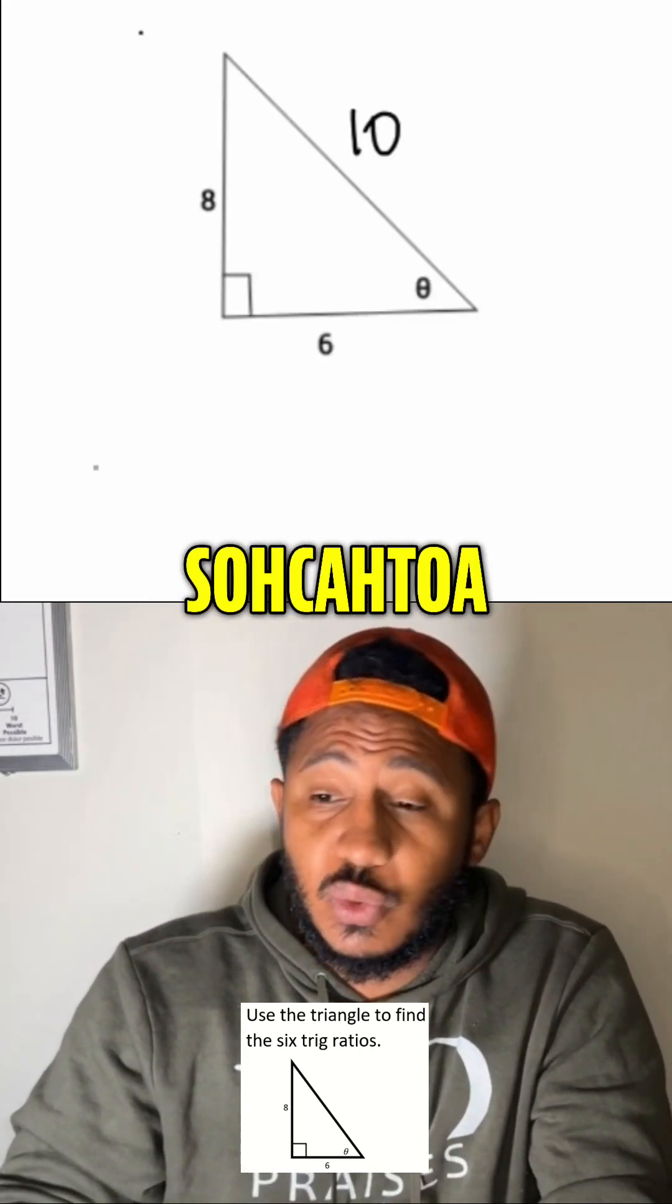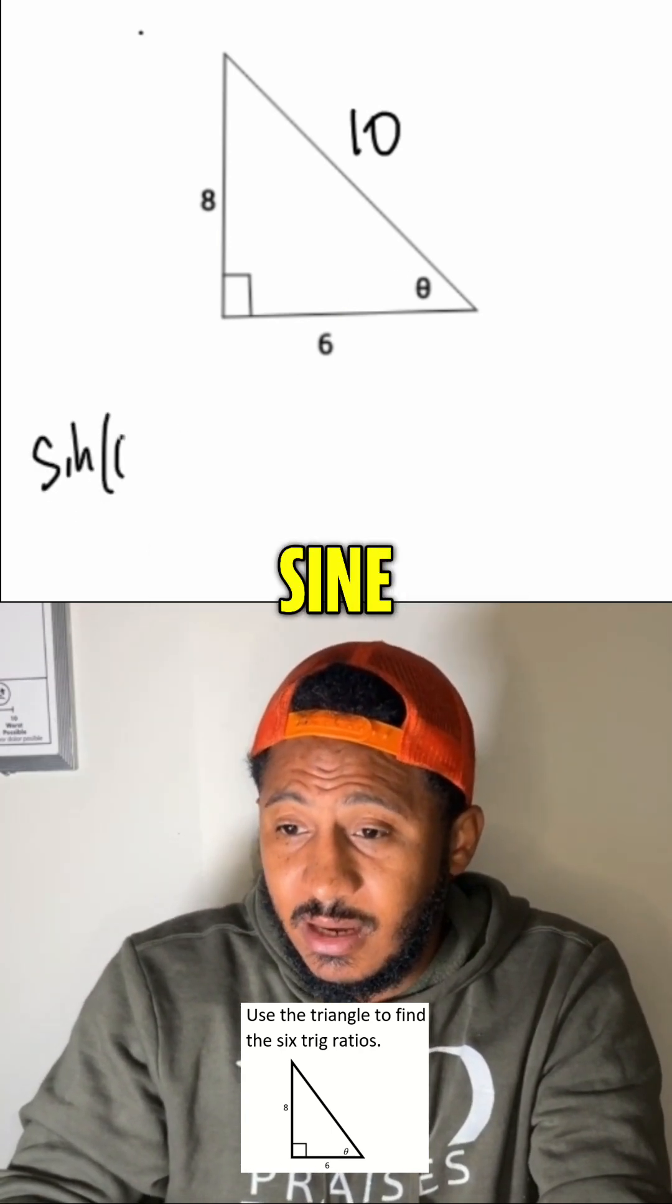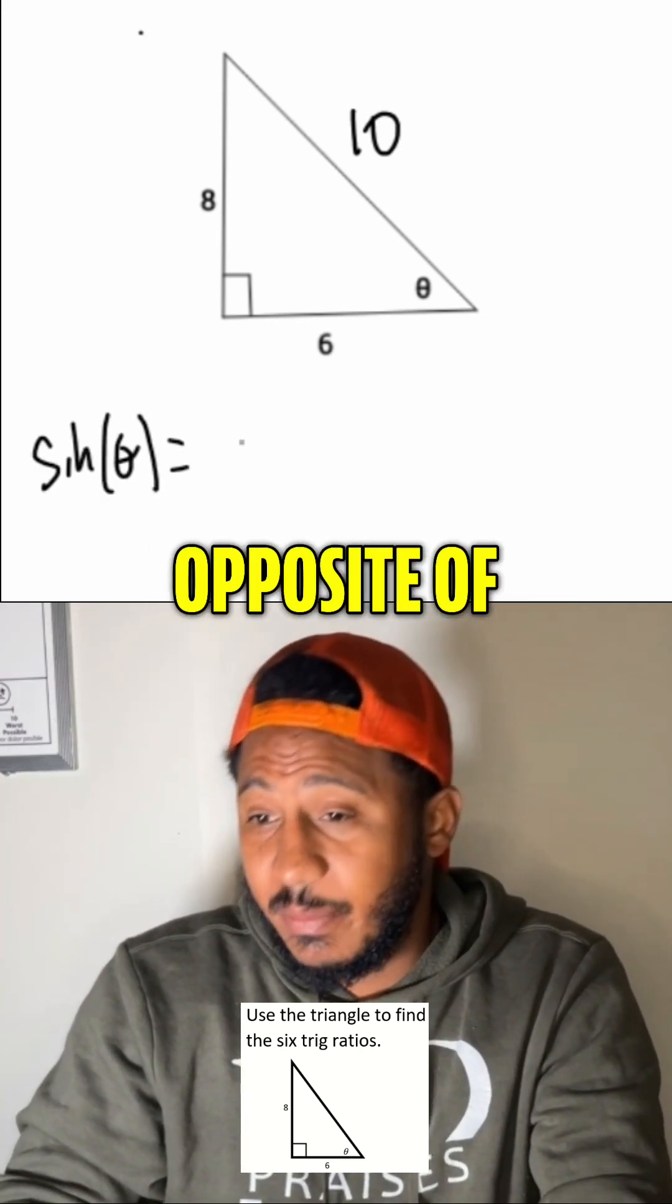So, how do we find the six trig values? Well, just use SOHCAHTOA from there. So, the six trig values on this theta. So, we know the sine of theta is the opposite over hypotenuse.